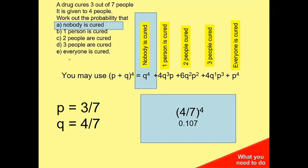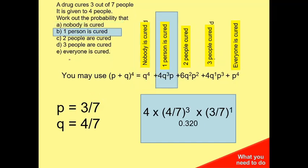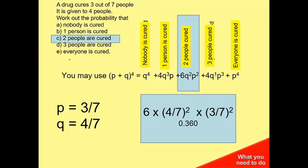So the first one is nobody's cured. That's q to the power 4, which is (4/7) to the power 4, which is 0.017. Next one, I'm just substituting the values in. One person is cured, so it's going to be 4 times (4/7) cubed times (3/7) to the power 1, which is 0.302.